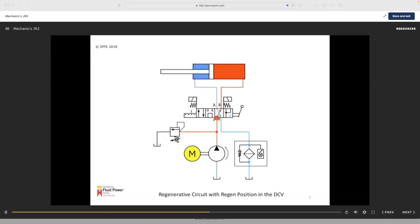The solenoid position extends the cylinder with all of the pump flow going into the cap end. This position is held with the solenoid energized. The cylinder retracts with all of the pump flow going to the rod area.